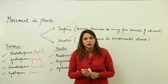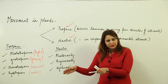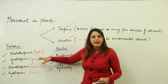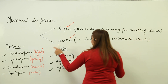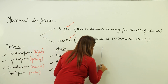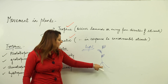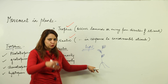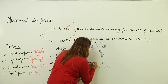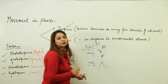When the direction of movement of the plant is towards the direction of the stimulus, it is called positive movement, and when it is away, it is called negative movement. Taking light as an example: roots go away from light, so they are negatively phototropic, but the shoot moves towards the sun, so it is positively phototropic.